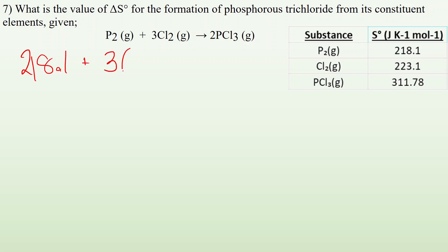well, there's three Cl2s. So three times 223.1. And then I look at the products. I got two PCl3s at 311.78 each.